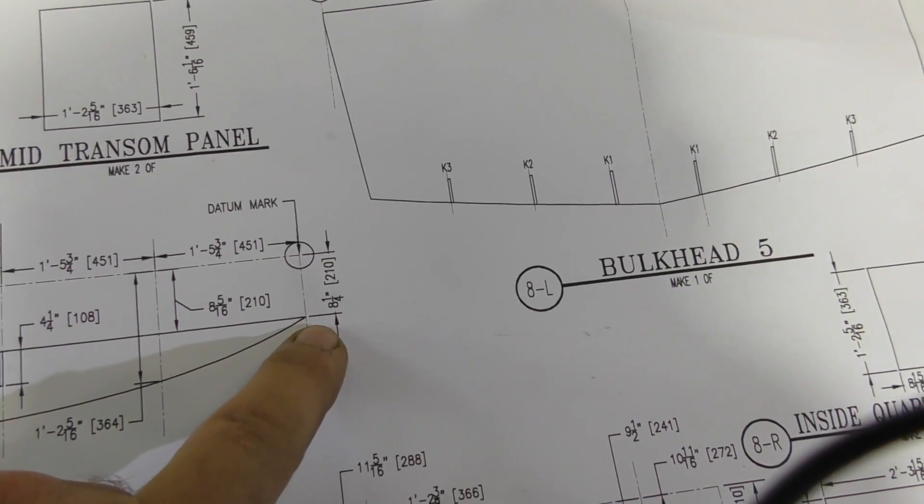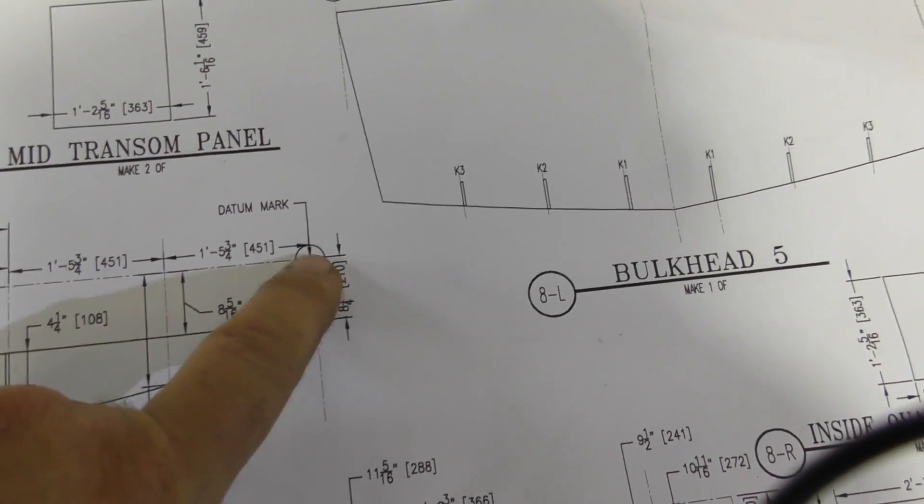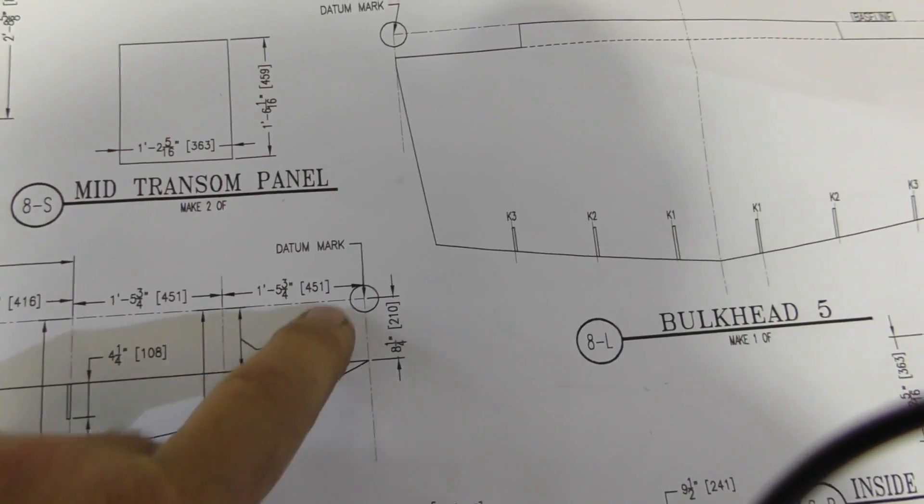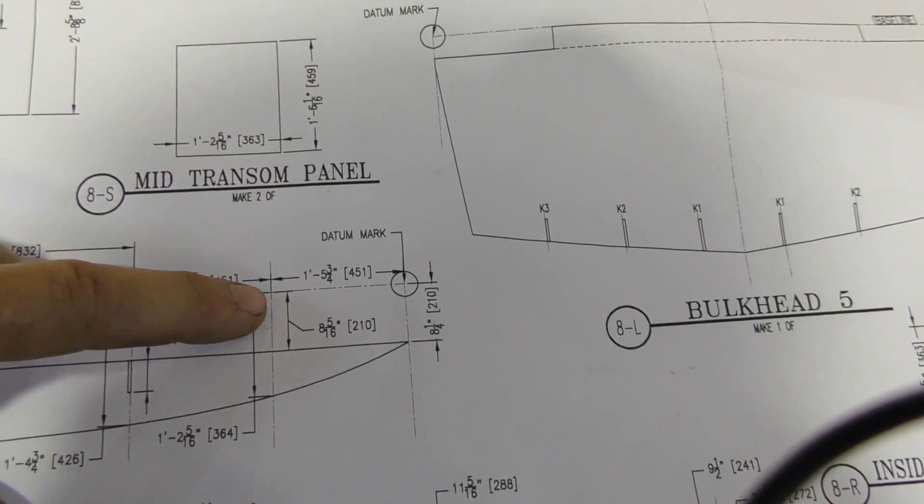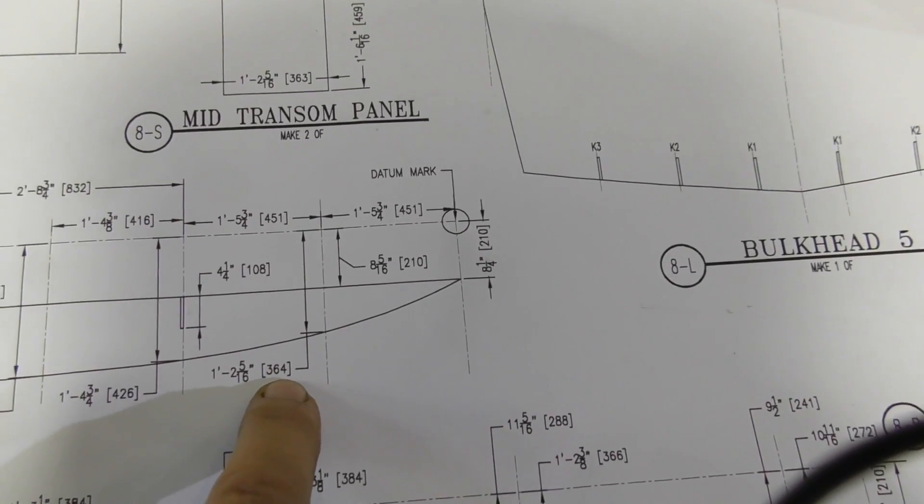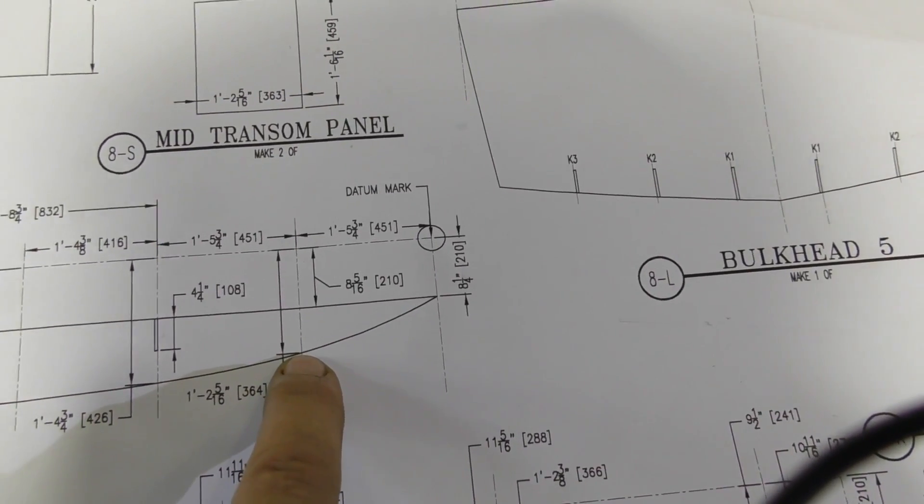First measurement here is 210 millimeters down this edge of the plywood, then we come across the other edge of the plywood, 451 millimeters. When we get to there, we have to come down here, 364, and this is where I'm going to put the first nail.